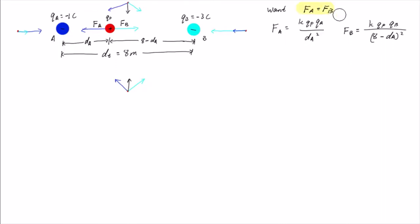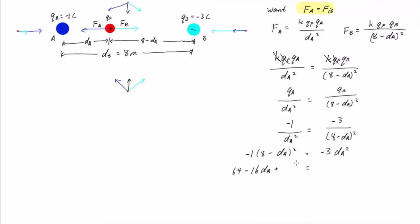We want FA equals FB. So k qP qA divided by dA squared equals k qP qB divided by 8 minus dA squared. Now we can try to solve for dA and find where the positive charge must be located to balance the two forces. Well, the k's and the qP's cancel, so we're left with this expression. Substituting in the right numbers, and now we just need to solve for dA.